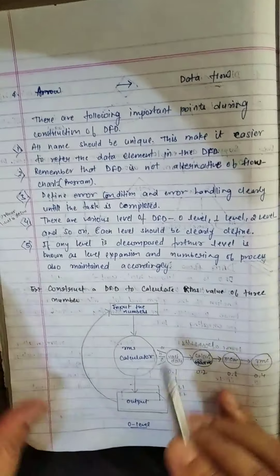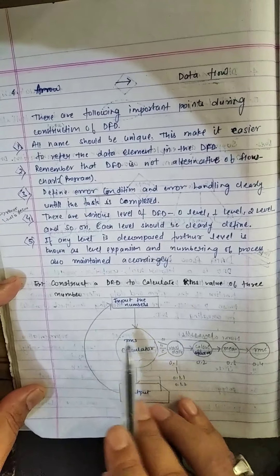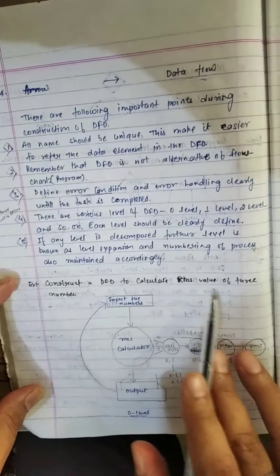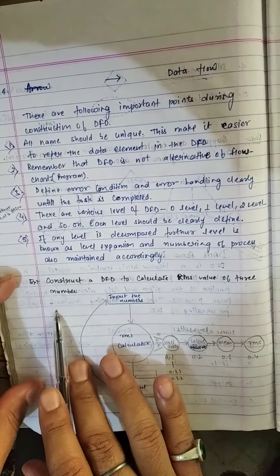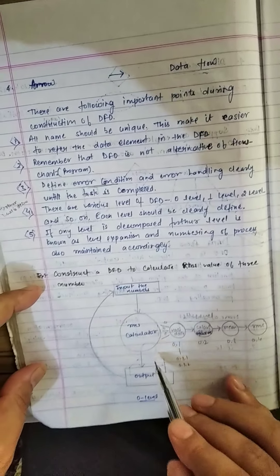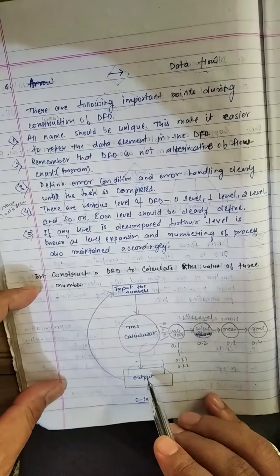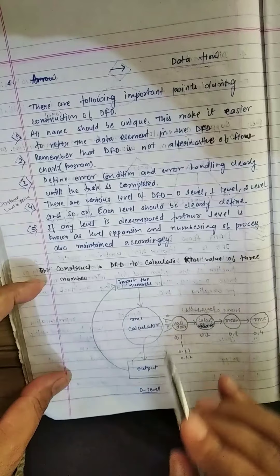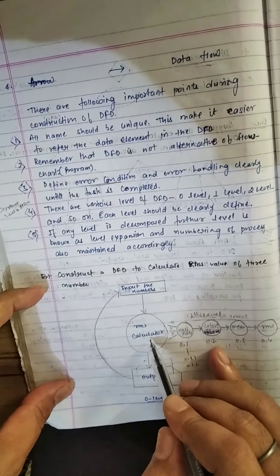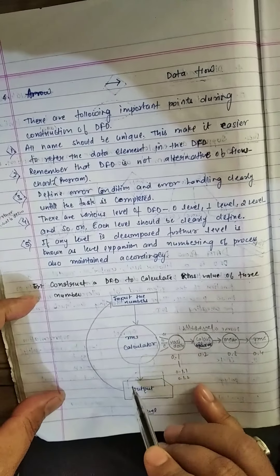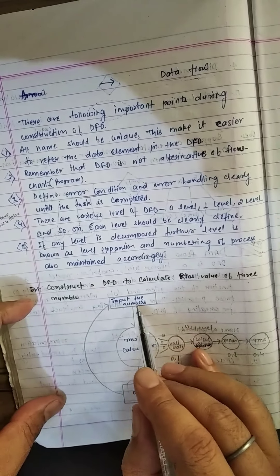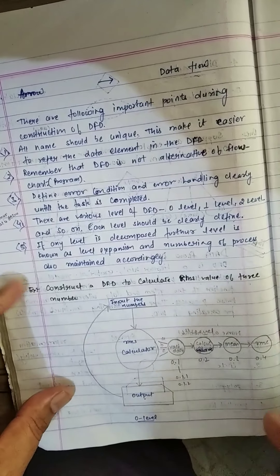Here I am going to explain with an example the constructed DFD to calculate the RMS value of three numbers. This is the zero level DFD, in which the input is the numbers, and the process is the RMS calculator. The output is directly represented to the input screen after processing.